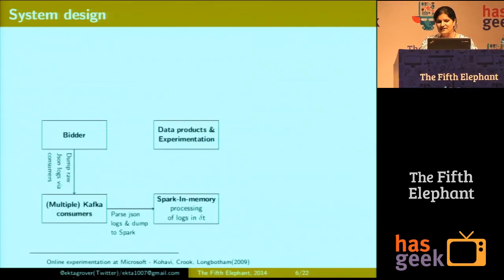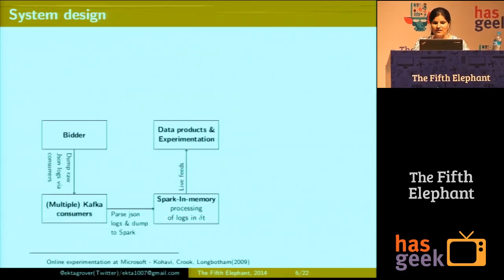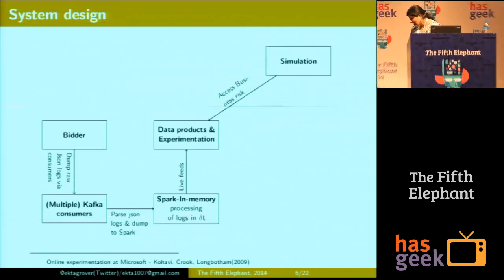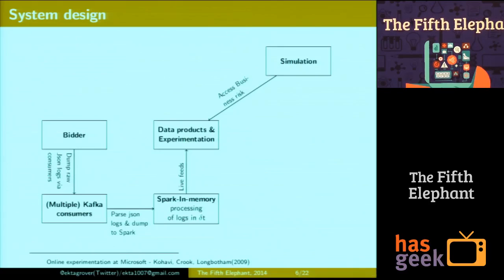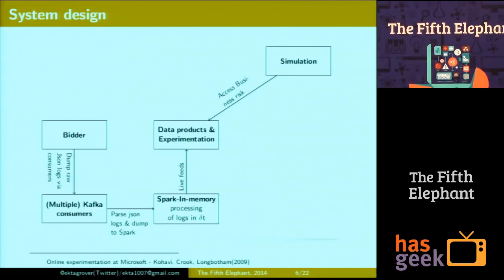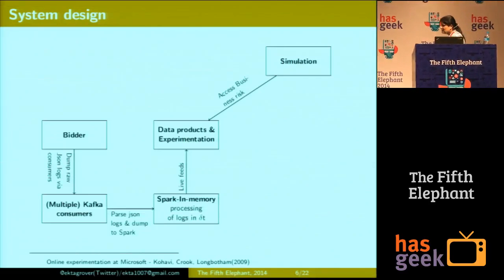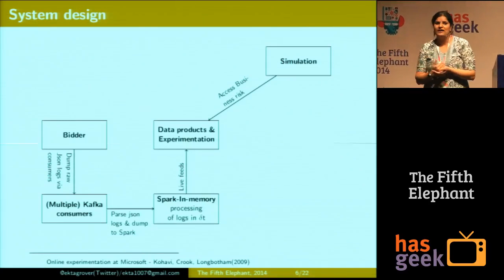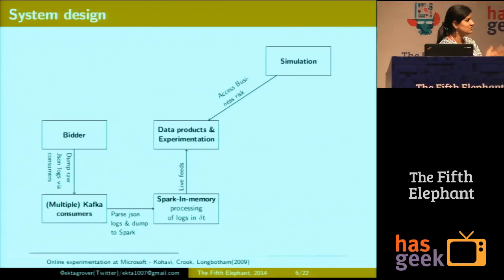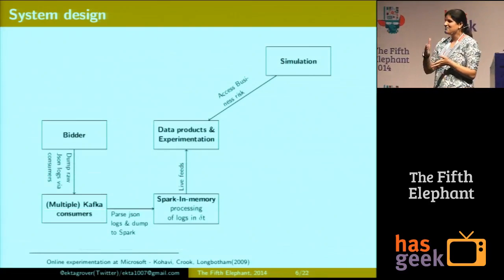Obviously the data needs to flow into our data products and experimentation. You have live feeds flowing in. Once you have some reasonable confidence about your experimentation, you want to estimate the business risk you're putting yourself up for. We do something like: what is the amount of dollars we hope to spend until the time we learn that this is performing and this is not performing. Which is to say that we should know when to stop an experiment and when to keep going.